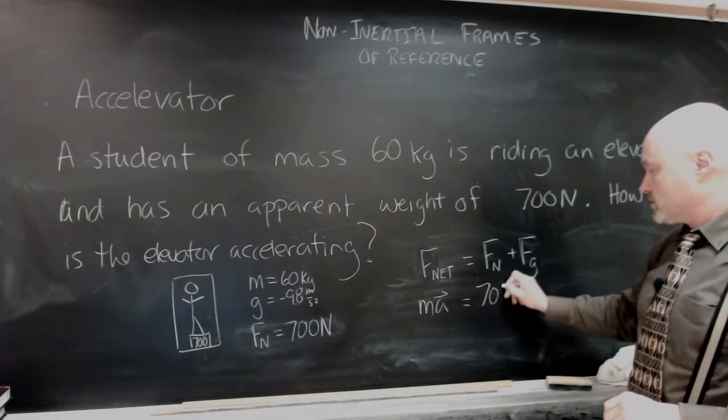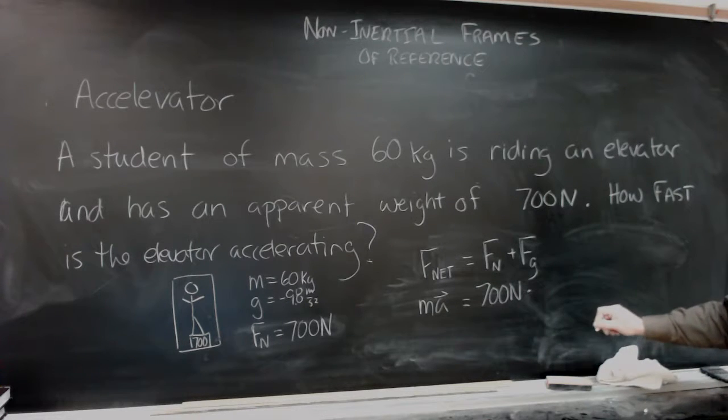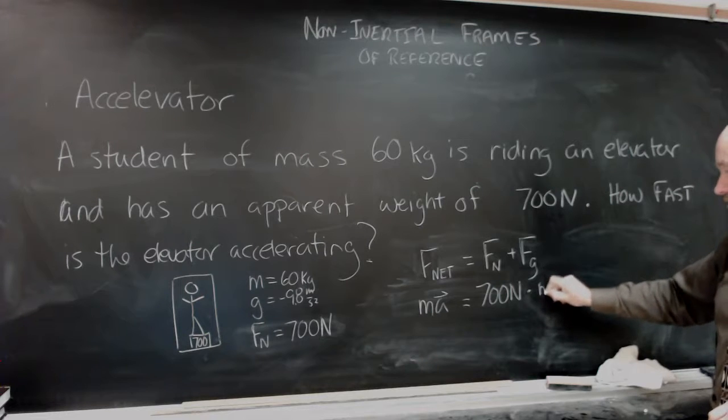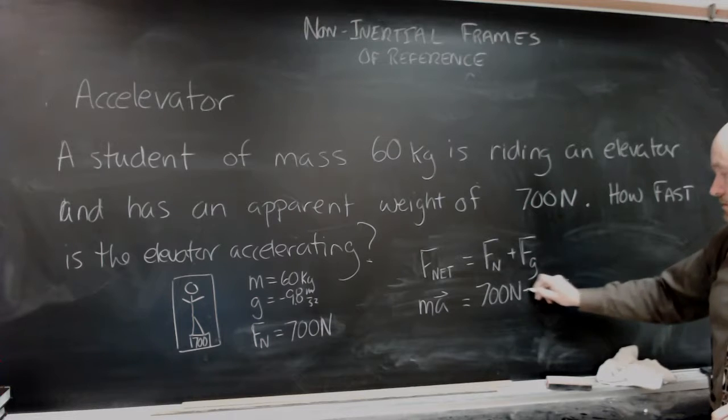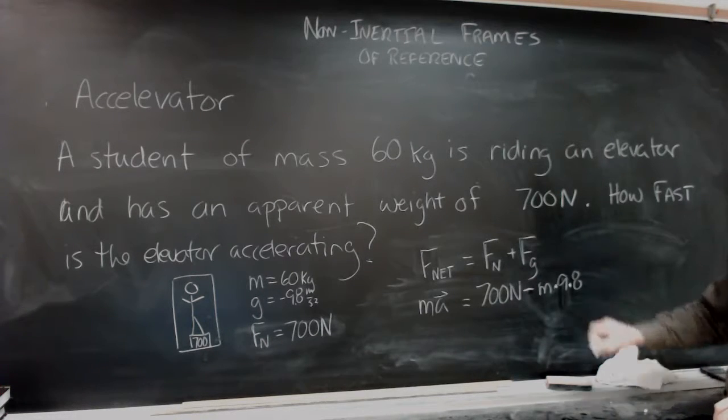The normal force was given to us as 700 newtons. And the force of gravity is going to be equal to the mass of the person times the acceleration due to gravity, 9.8. We'll actually indicate that that's going down.